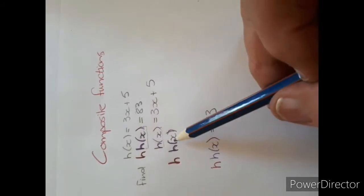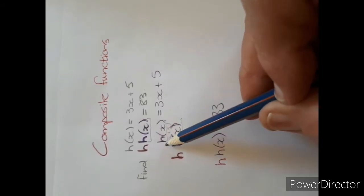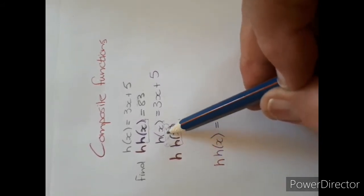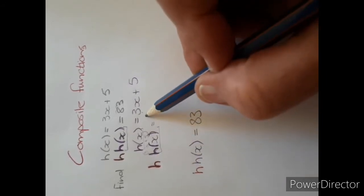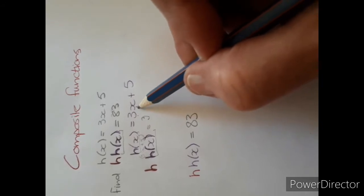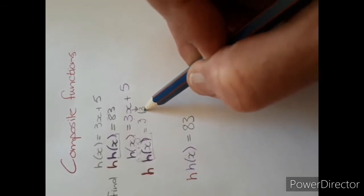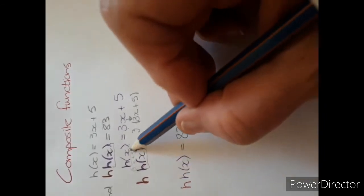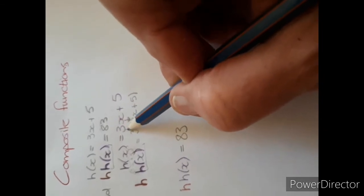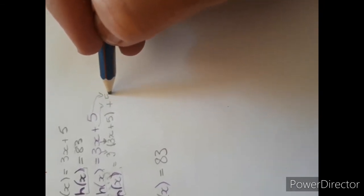Now you must actually substitute the H(x) with 3x plus 5. So we could really also say H in brackets of 3x plus 5. What that really means is that you're going to take your H(x), which is 3, and then in the place of x, you must now substitute 3x plus 5. So you have substituted the x with 3x plus 5. That 3 comes from there, then comes another plus, and then comes another 5.